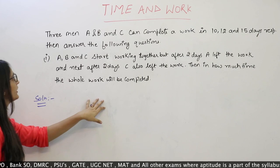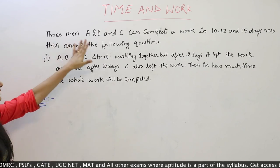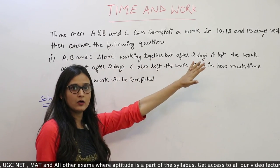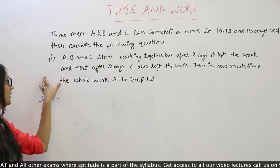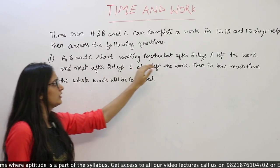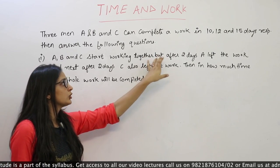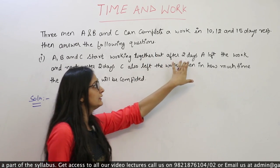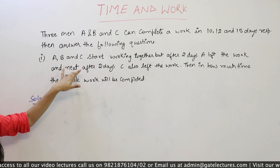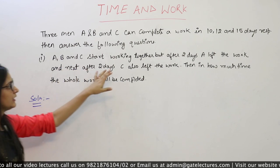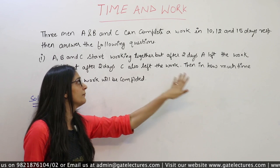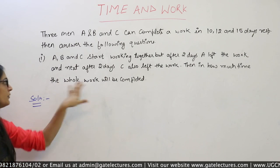I repeat the question. A, B और C किसी काम को 10, 12 और 15 दिन में पूरा करते हैं. A, B, C ने साथ में काम करना शुरू किया, लेकिन 2 दिन बाद A काम छोड़कर चला गया. और उसके 2 दिन बाद C काम को छोड़कर चला गया. अब हमें ये बताना है कि काम कितने दिन में पूरा हुआ.